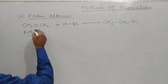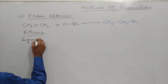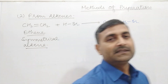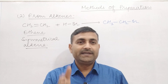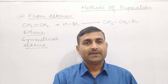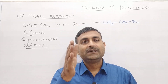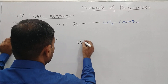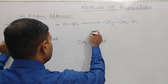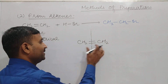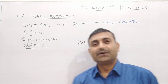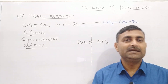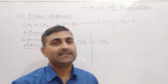Now this ethane is a symmetrical alkene. What are symmetrical alkenes? The alkenes which can be equally divided into two halves — if an imaginary line is drawn through the doubly bonded carbon atoms. In CH2=CH2, if we draw a line through the double bond, we get two equal halves. Such kind of alkene is known as symmetrical alkene.